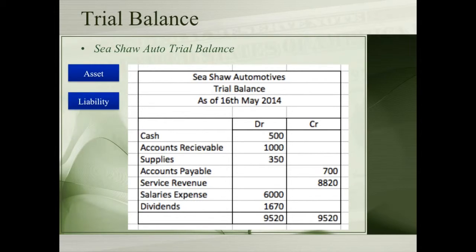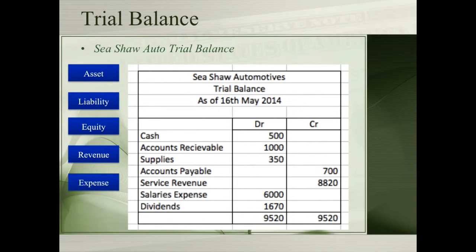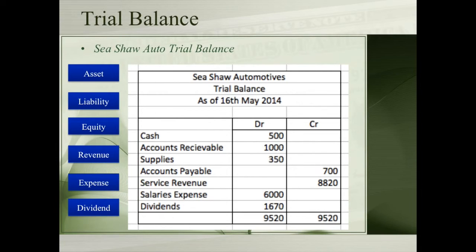The account order is: assets, liability, equity, revenue, expense, and dividend. This ensures that the trial balance is neat and easy to read. In this example you can see that it balances out, therefore indicating no mistake has been made whilst transferring all information.